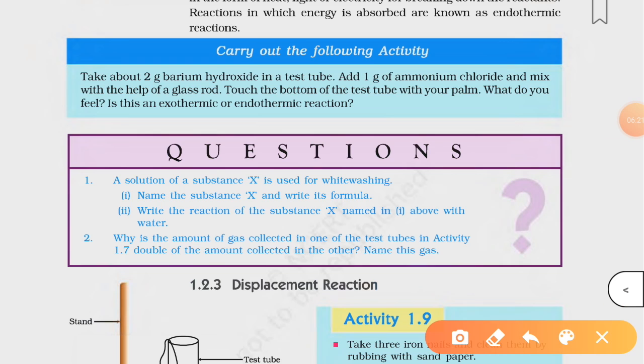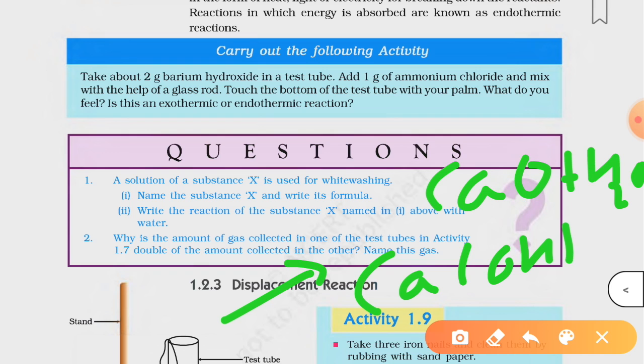Now, a solution of substance X used for whitewashing. Name the substance X, write its formula and its reaction with water. The thing which we are talking about here, which is used for whitewashing, is quicklime, which is calcium oxide. So its formula is CaO. Now when quicklime reacts with water, it undergoes a combination reaction in which it forms Ca(OH)2, which is calcium hydroxide and also known as slaked lime.